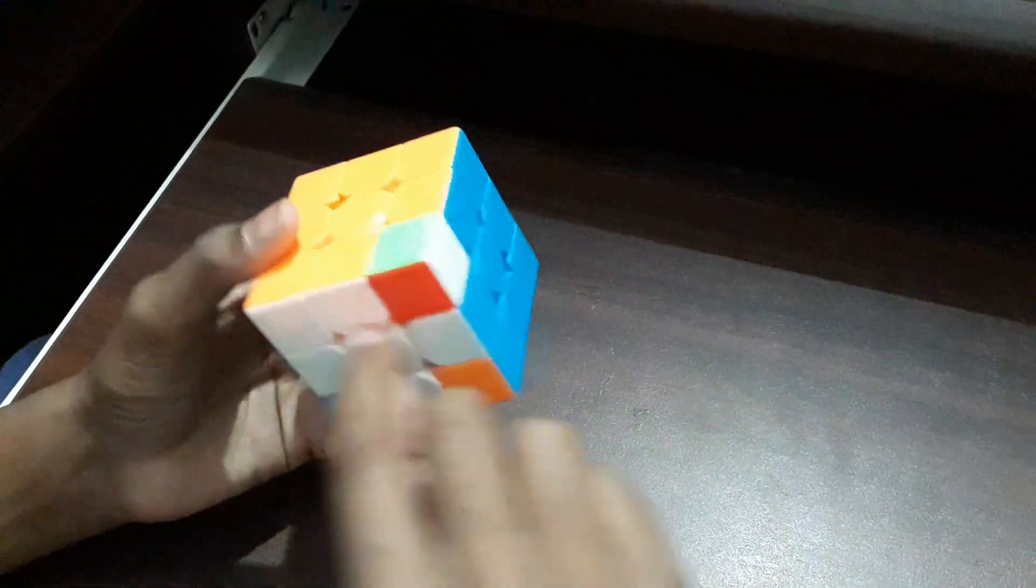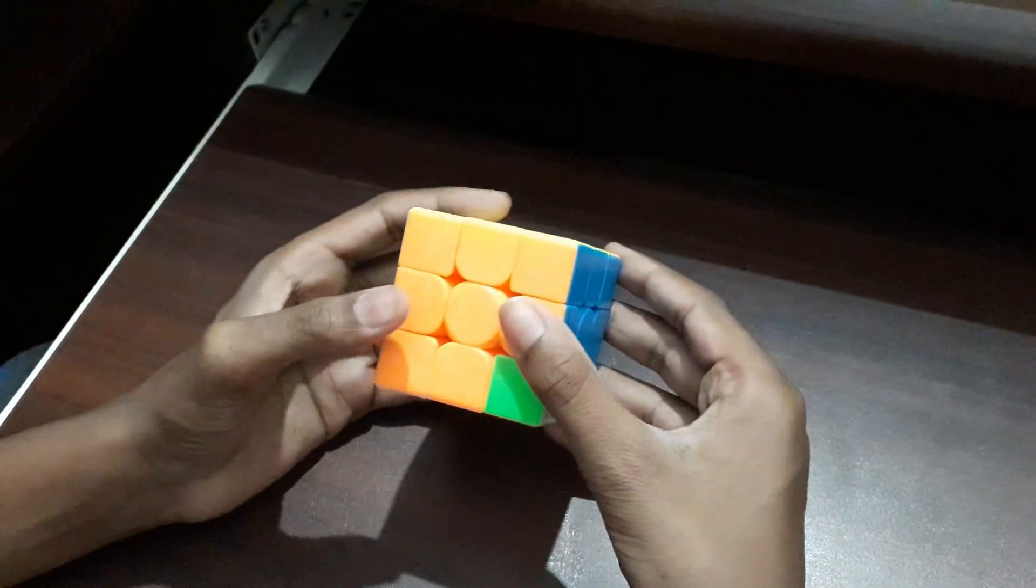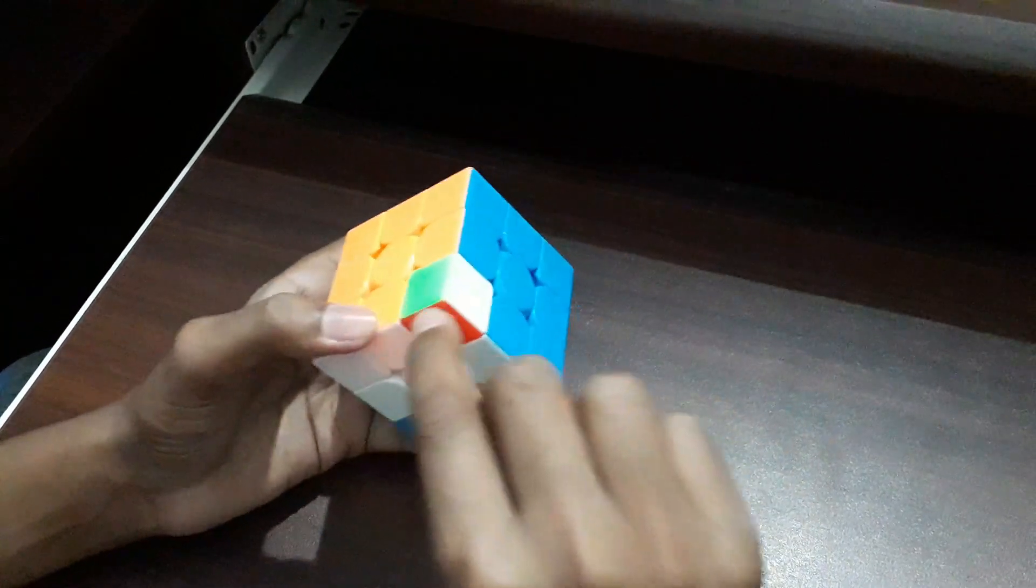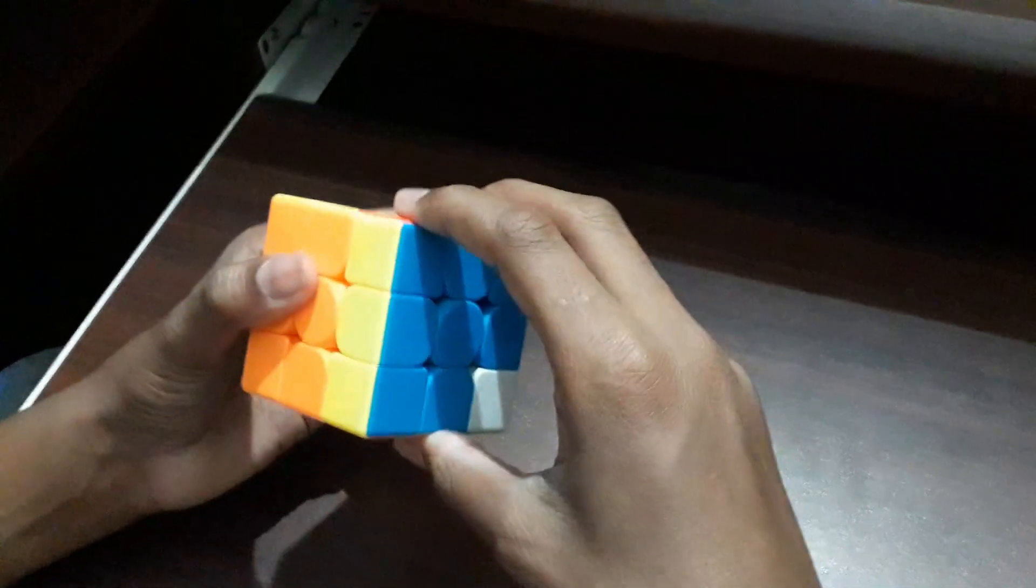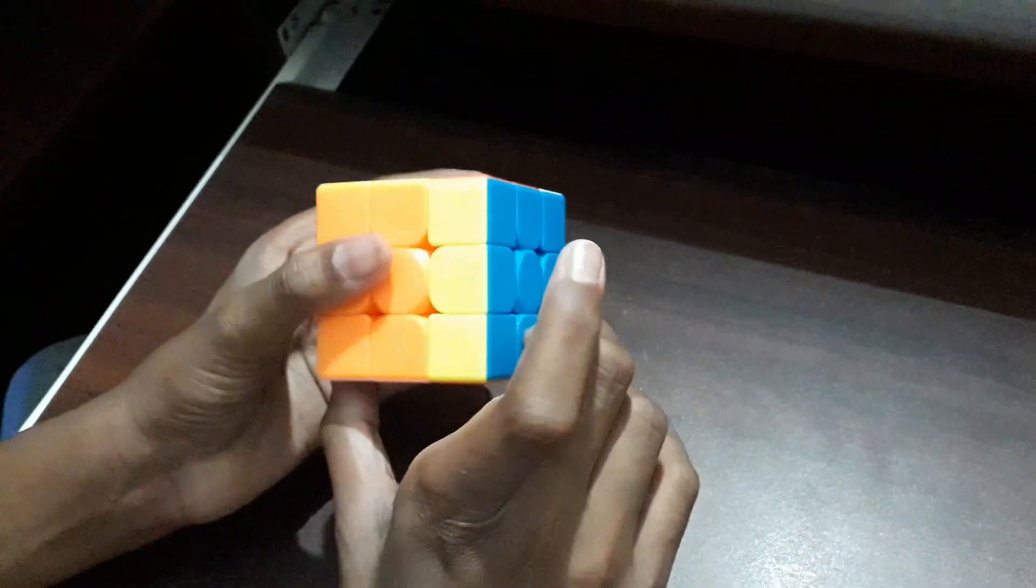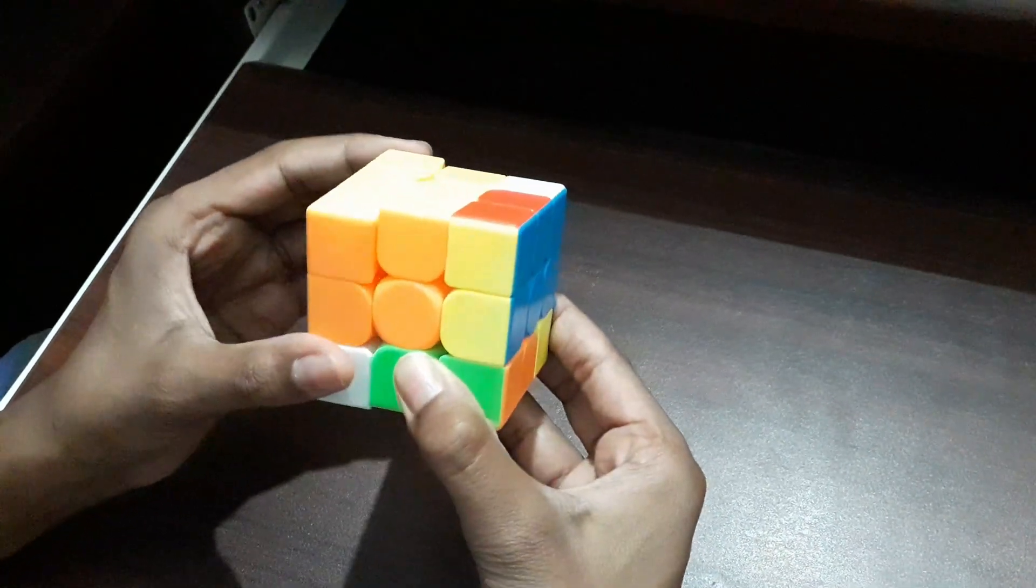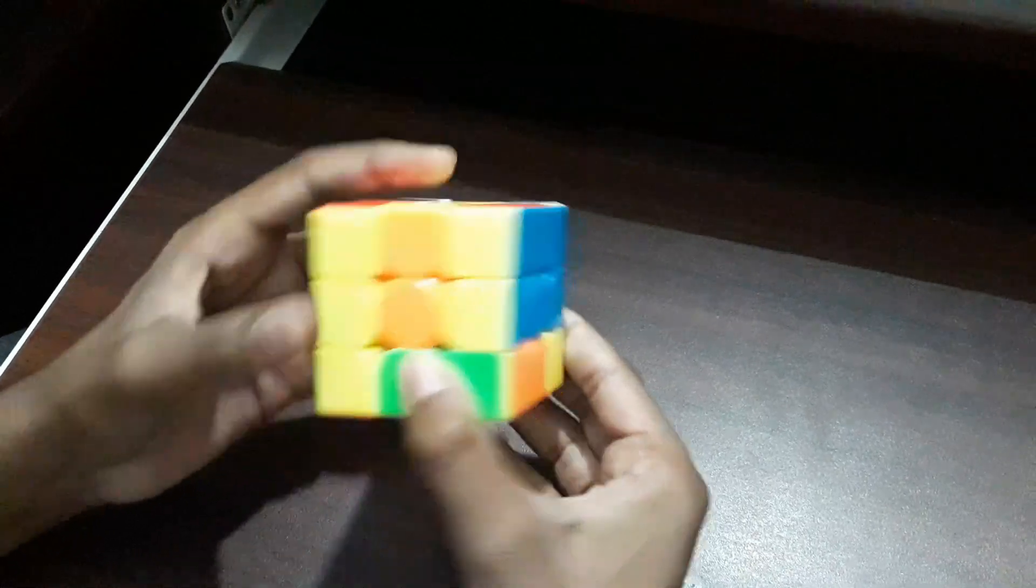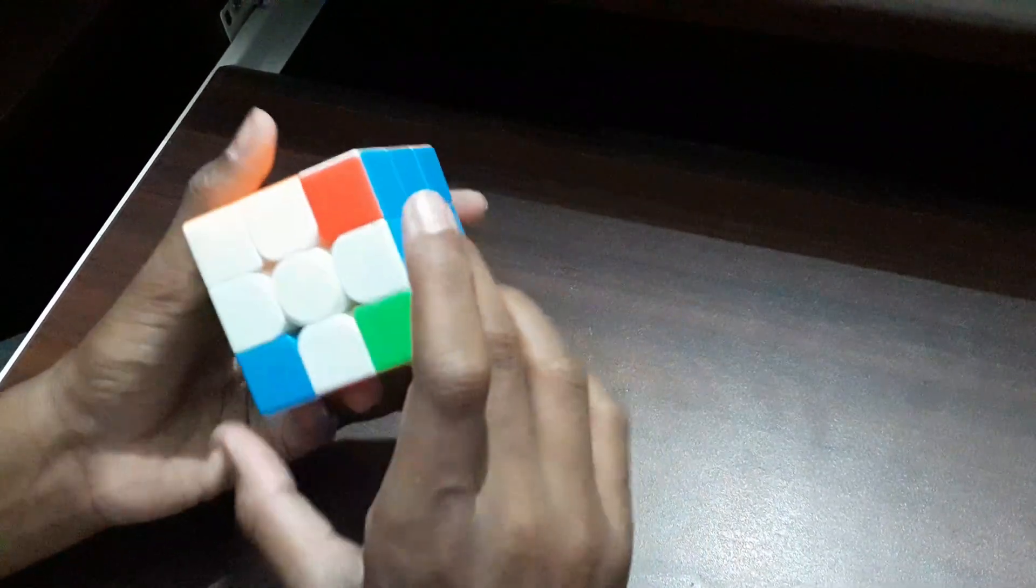We are going to use the L11 technique we used earlier to place the corners in their right position. First, in order to perform the L11 technique, we are going to move this to the right side in an anti-clockwise direction, then move the bottom clockwise, then move the left side clockwise and the bottom anticlockwise, and then we are replacing the formula.